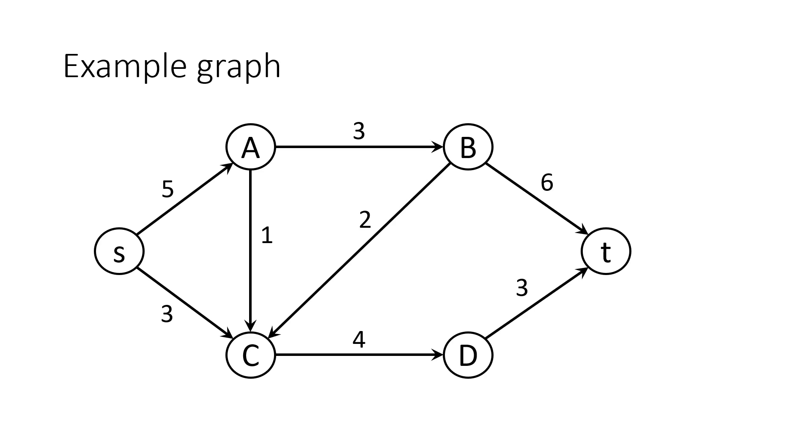Here's an example of a graph that you might want to find the maximum flow of. There are six nodes, S, A, B, C, D, and T, and many edges. The numbers on these edges are the capacities, how many units of flow that they can hold.